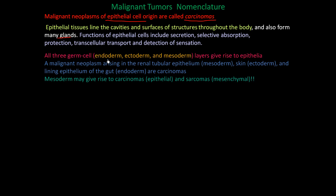All three germ layers — the endoderm, ectoderm, and mesoderm — can give rise to malignant tumors from epithelial tissue because epithelium comes from all of these layers. If it's from mesoderm or mesenchyme, you call it a sarcoma. If it's epithelial, you call it a carcinoma. For example, a malignant neoplasm in the renal tubular epithelium is a carcinoma from the mesoderm; malignant skin tumors are carcinomas from the ectoderm; and lining of the gut from the endoderm can also be a carcinoma.